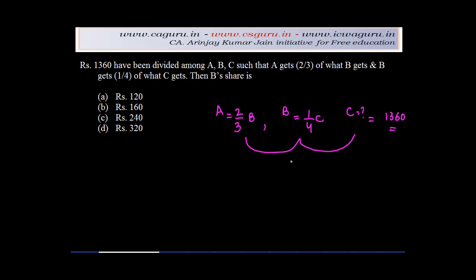Now in order to solve these questions, what we try to do is, obviously we have three people here. And the only common link that we have in these two is B. Because A is also dependent on B and B is dependent on C.